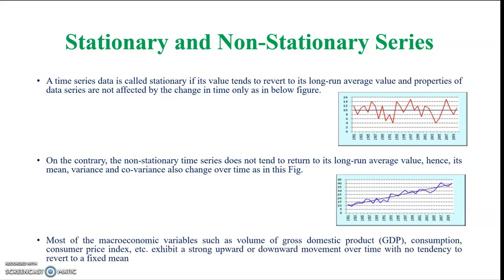Most of the macroeconomic variables such as gross domestic product, consumption, consumer price index etc. exhibit a strong upward or downward movement over time with no tendency to revert to a fixed mean.